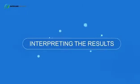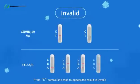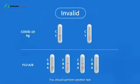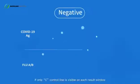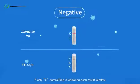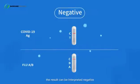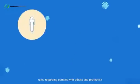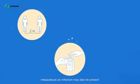Interpreting the results: if the C control line fails to appear, the result is invalid — you should perform another test. If only the C control line is visible on each result window, regardless of how faint the C line is, the result can be interpreted as negative. Continue to comply with all applicable rules regarding contact with others and protective measures, as an infection may also be present even if the test is negative.